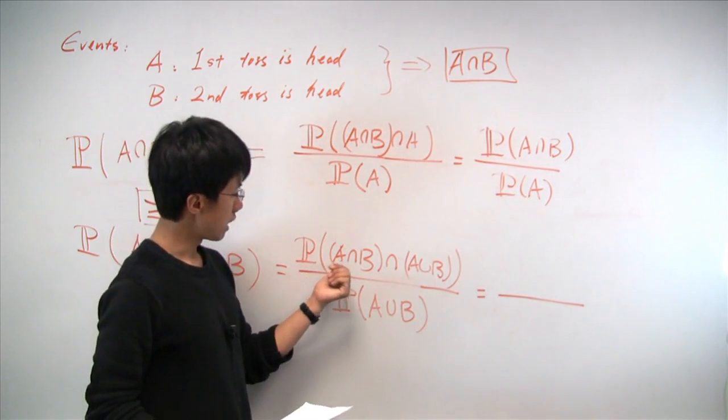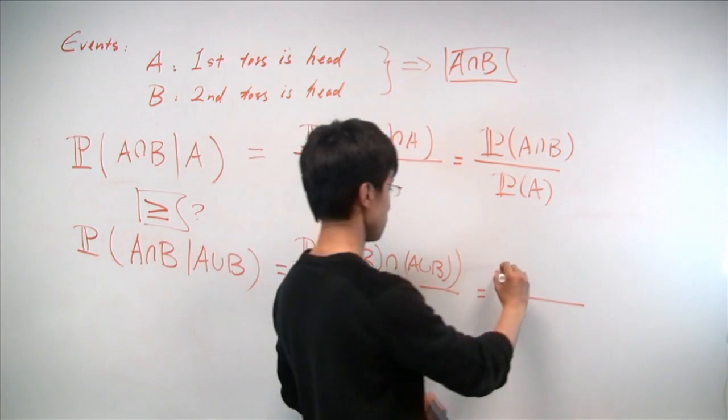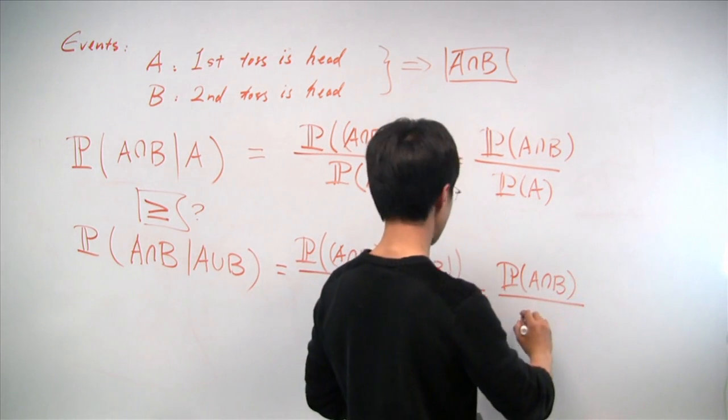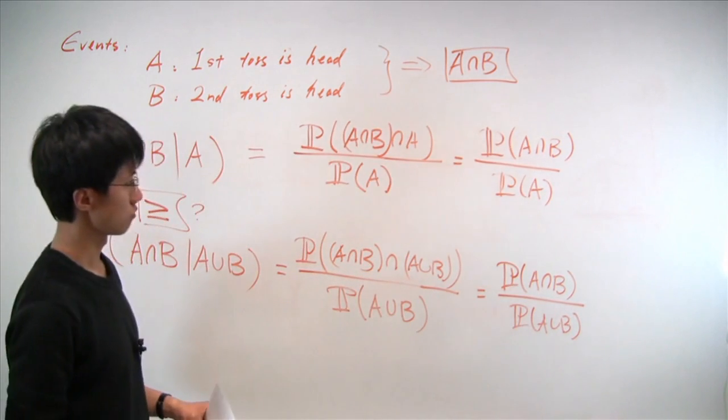Again, we see the event A and B is a subset of the event A union B. So the top will be A and B. And the bottom, A union B.